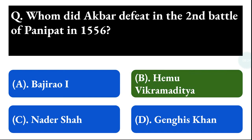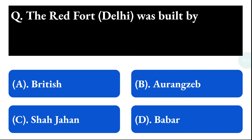Next question: the Red Fort, Delhi was built by — option A: British, option B: Aurangzeb, option C: Shah Jahan, option D: Babur. The correct answer is option C, that is Shah Jahan.